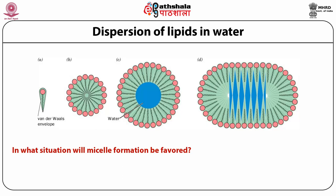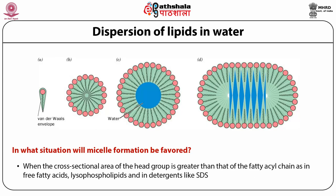Micelle formation is favored when the cross-sectional area of the head group of the lipid is greater than that of the fatty acyl chain, as seen in free fatty acids, lysophospholipids, or detergents like SDS. The polar head group is hydrated because it interacts with surrounding water molecules in the aqueous solvent, making this hydrated polar head group wider than the hydrophobic tail, as shown in part A of this figure.